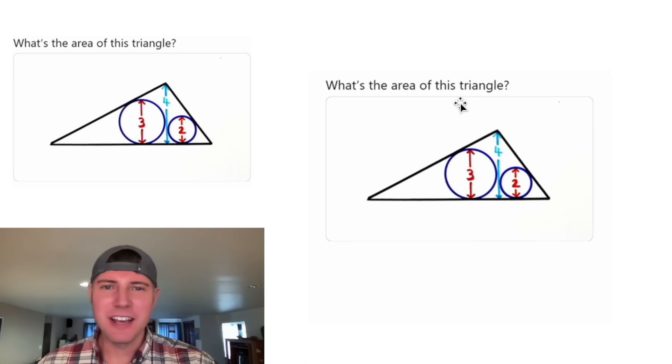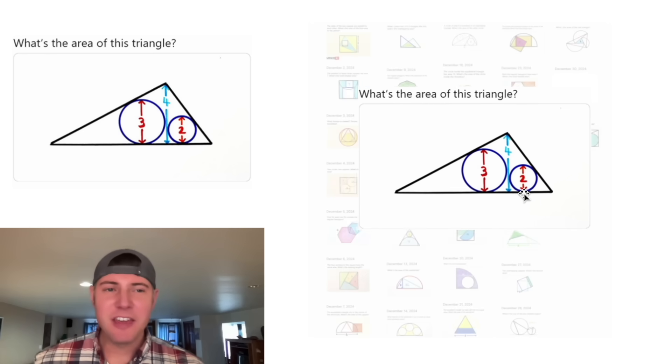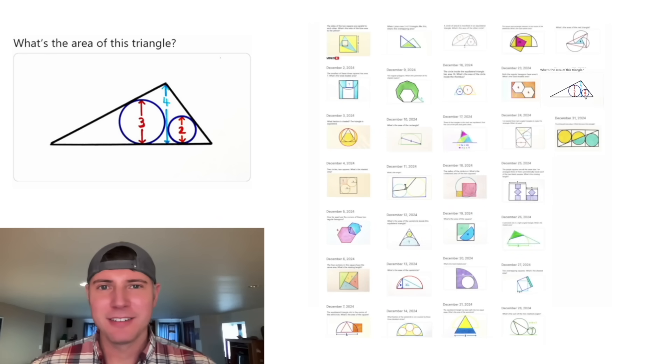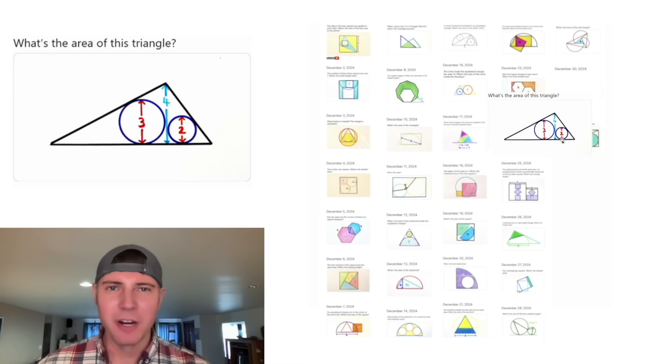Hey guys, this looks like a fun one. It says, what's the area of this triangle? Are we given that it has a height of four? This circle has a diameter of three and this circle has a diameter of two. This is day 30 of our Advent calendar. For the month of December, we're gonna solve 31 Katrina Ag puzzles in 31 days.